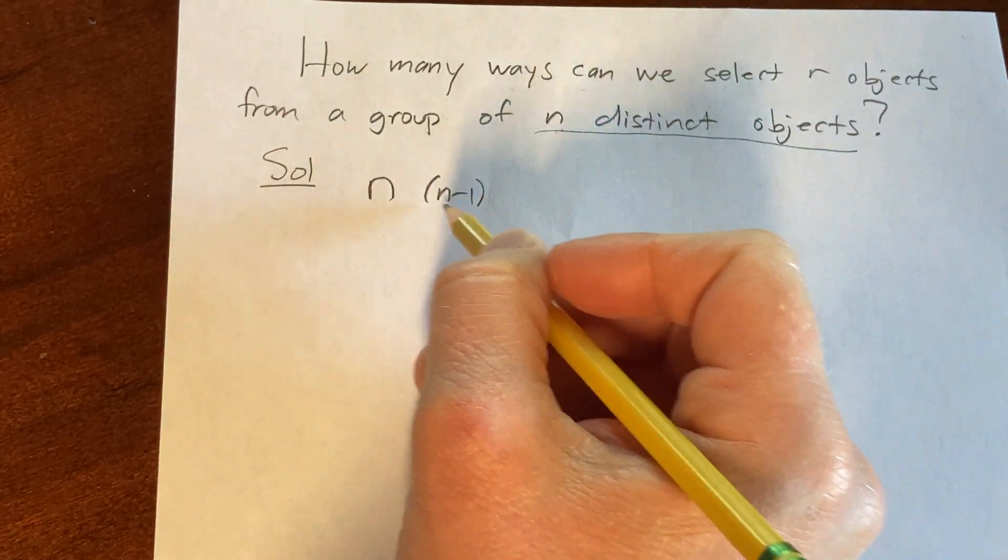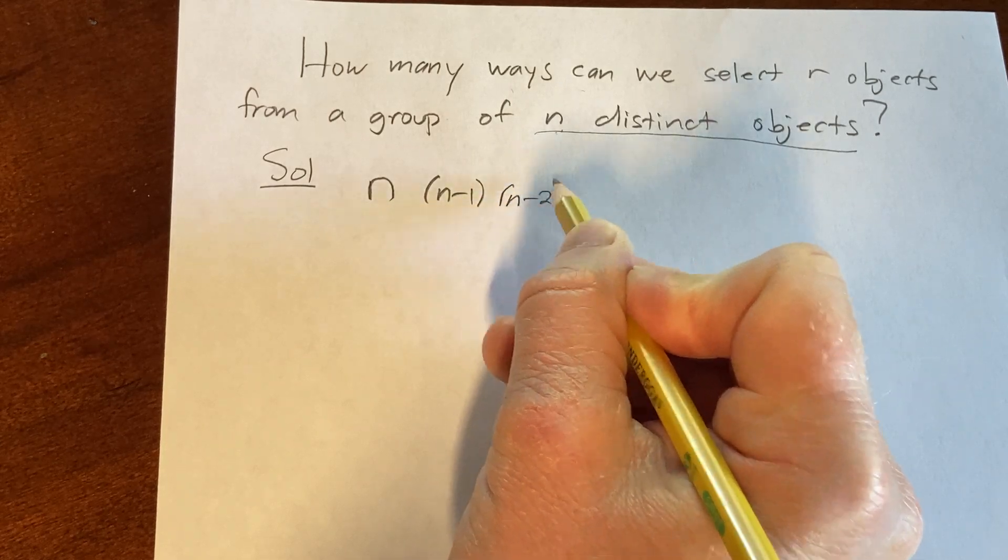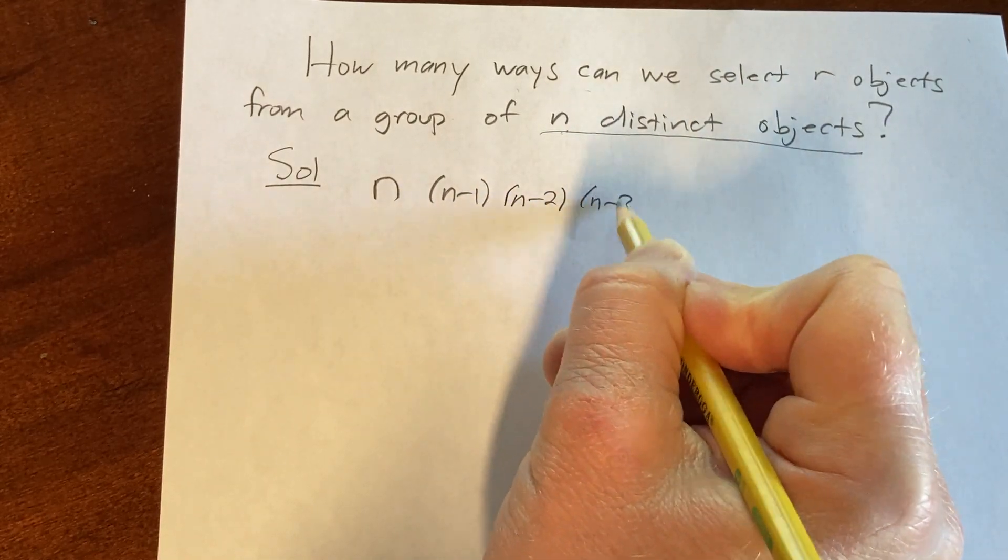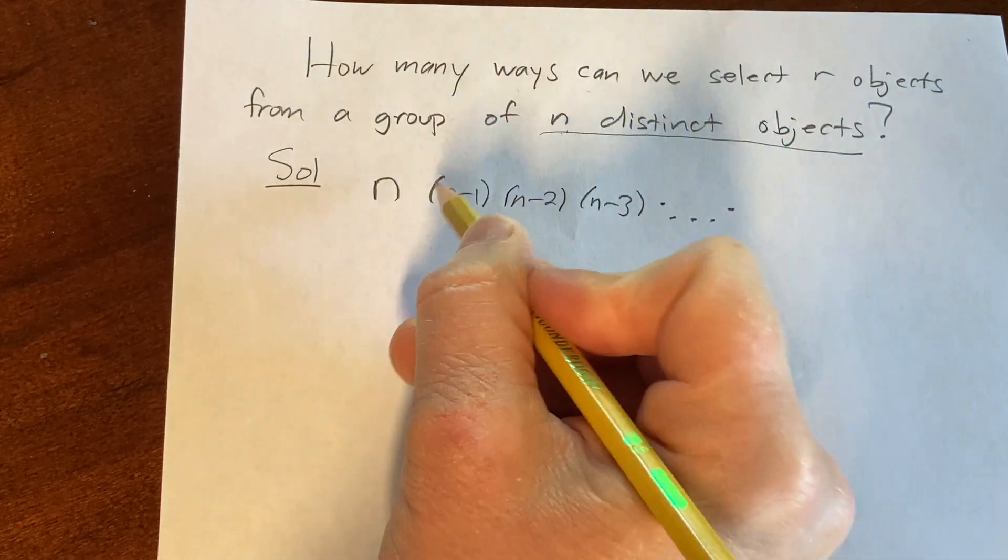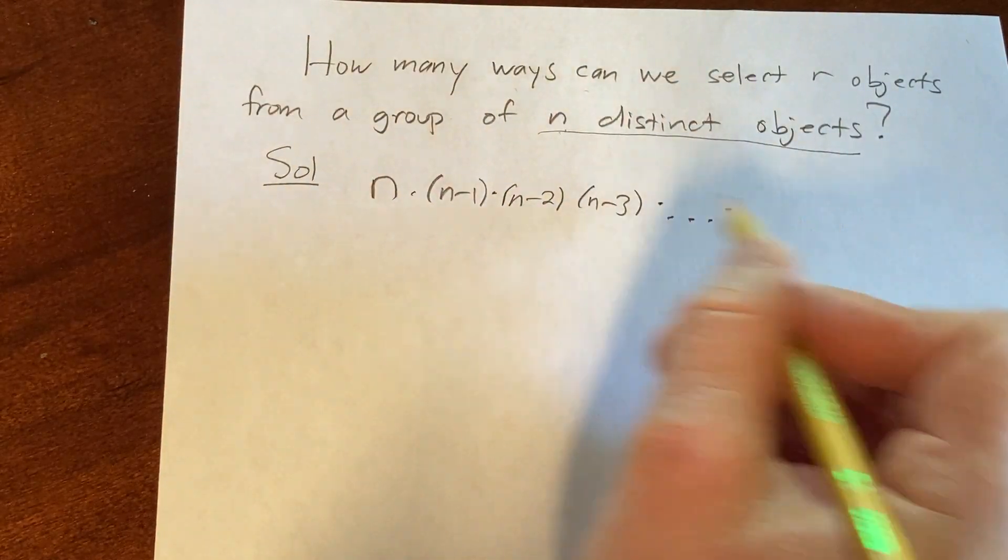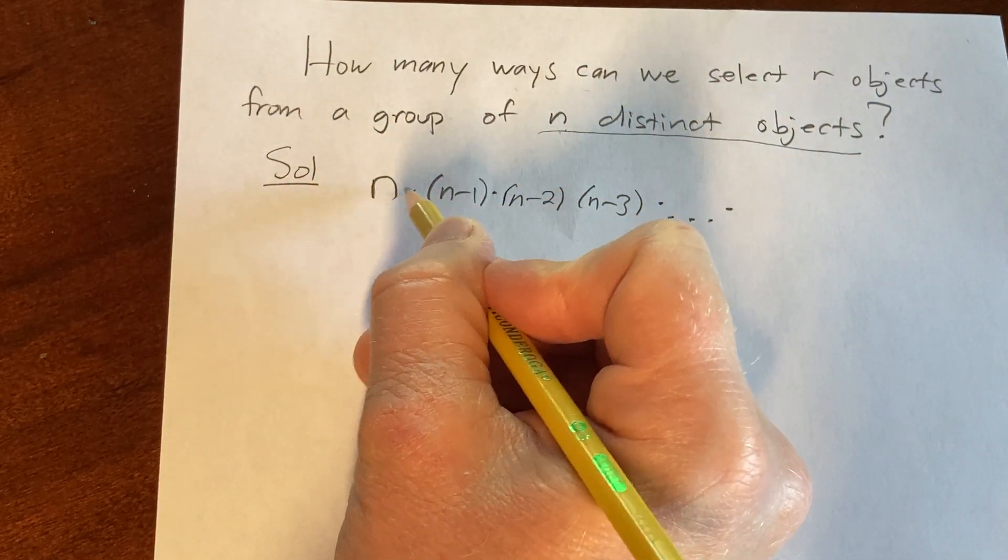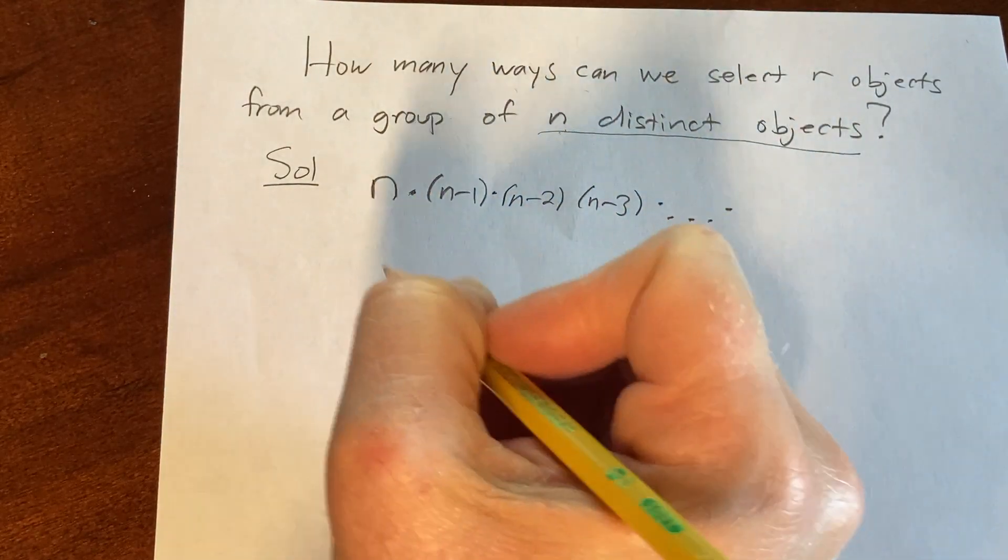But we've taken now two objects out and we started with n. So now there's n minus 2 ways to pick that third object, and then n minus 3, etc. The reason we times is because the multiplication rule says in order to pick r of them, you just multiply the product. You find the product of the individual ways of picking the individual objects.